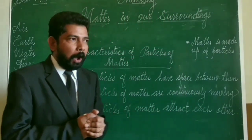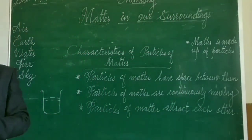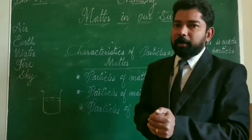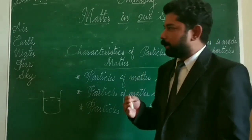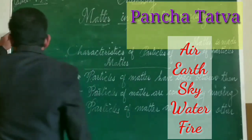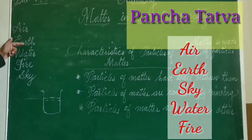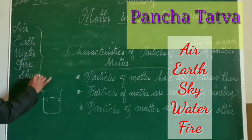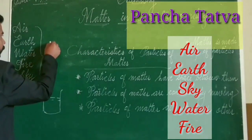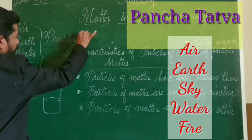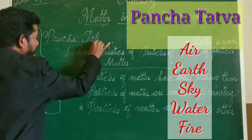Our ancient Indian philosophers classified matter into five elements: air, water, fire, earth, and sky. Together, all these five elements we can call as Panchatatva. So Panchatatva is the ancient Indian classification of matter.